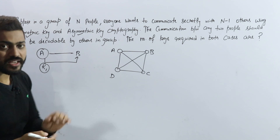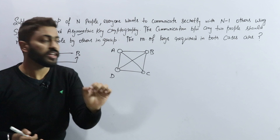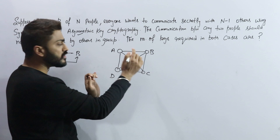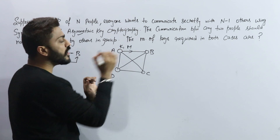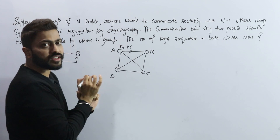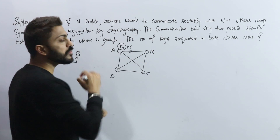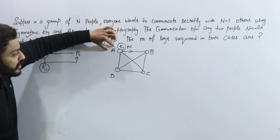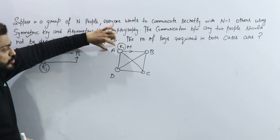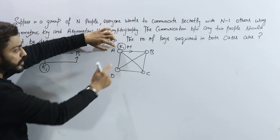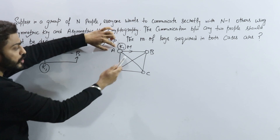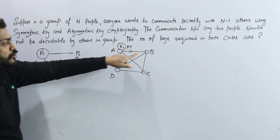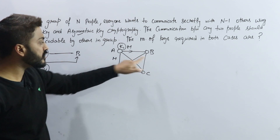In symmetric key cryptography, we use the same key to encrypt and decrypt. So if A sends a message to B using key 1, can A also use key 1 for D? No. If A uses the same key K1 to encrypt a message to D, then B — who already knows K1 — will also be able to decode that message.